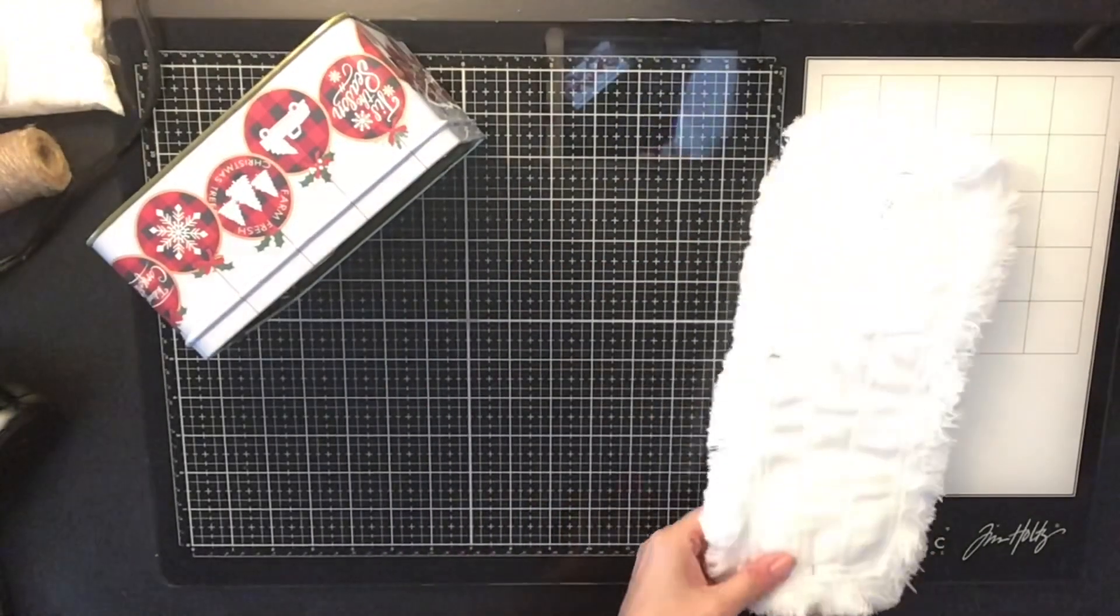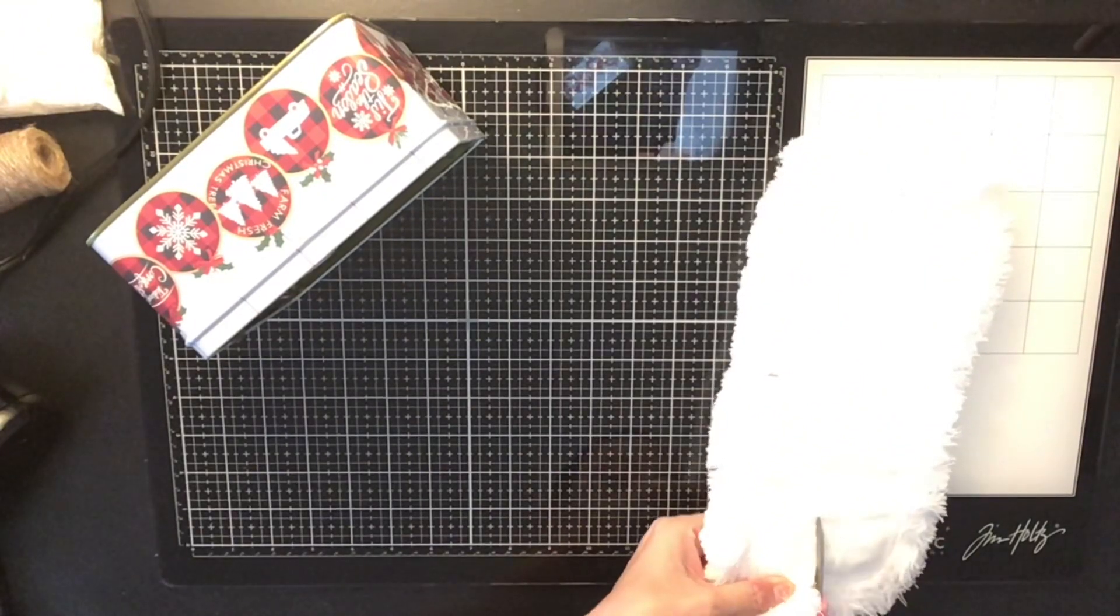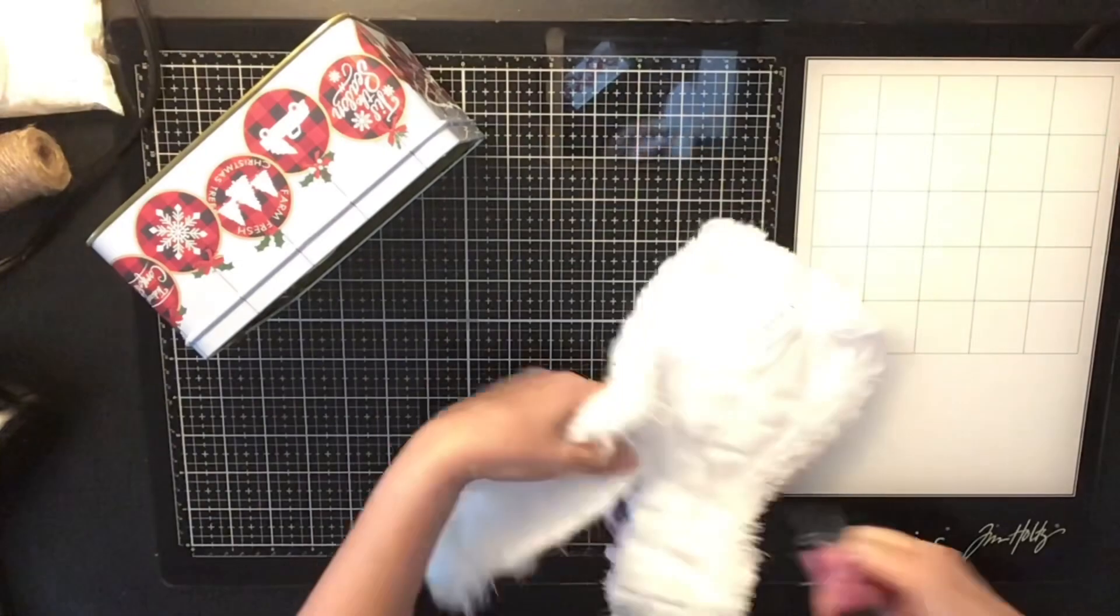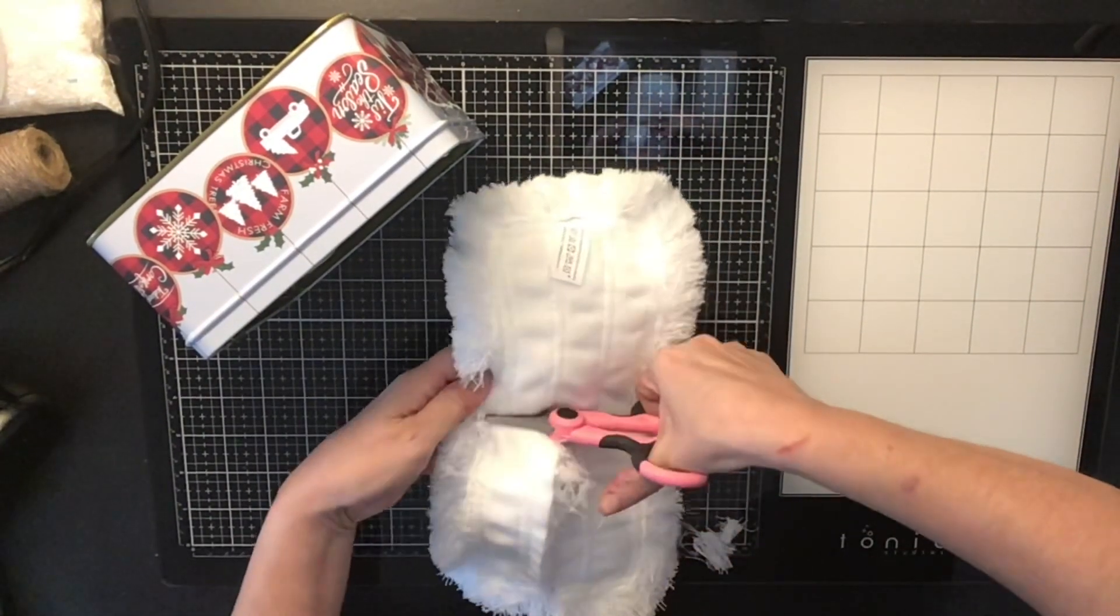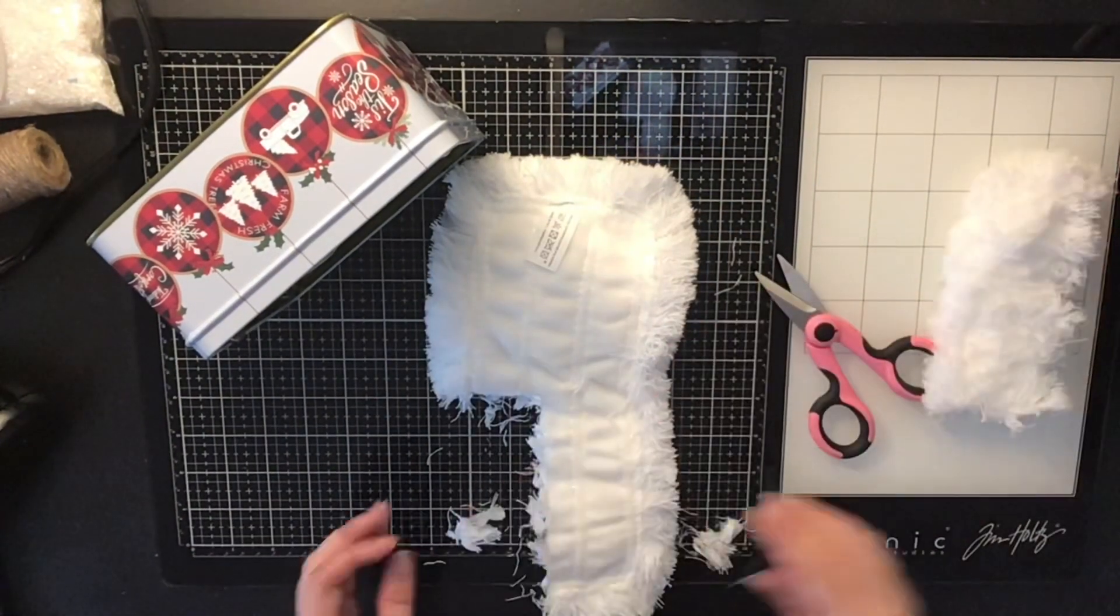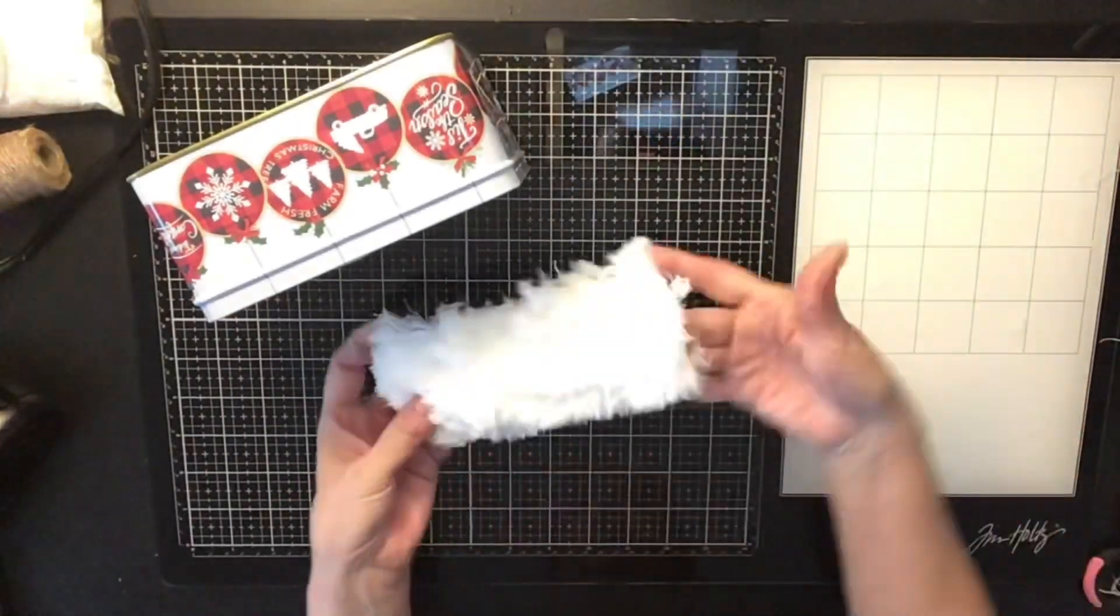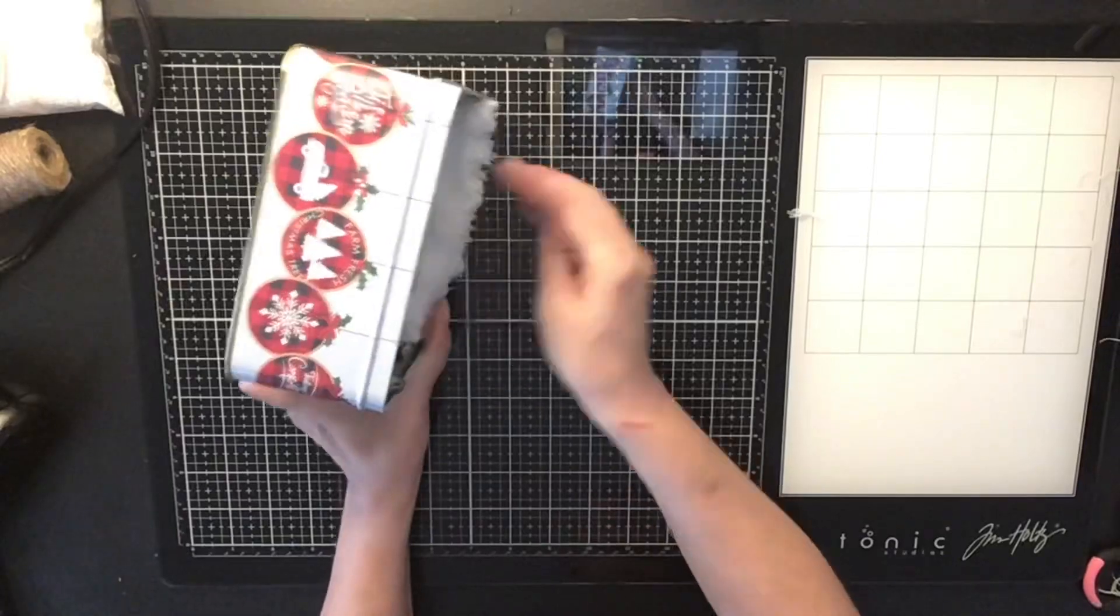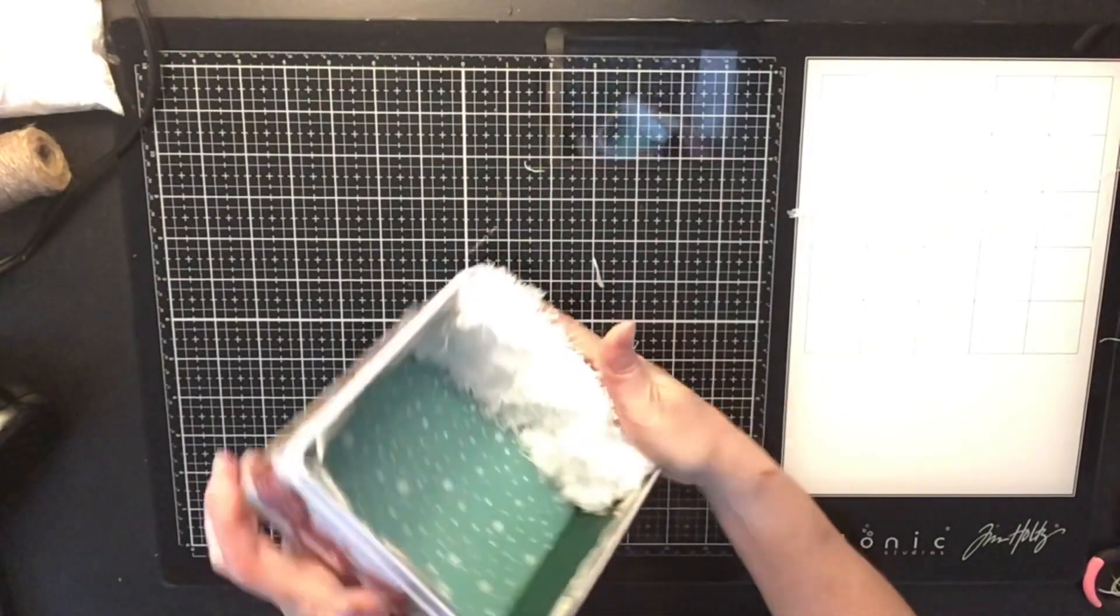And now this is also from the Dollar Tree. And it is like a dust mop and you find it in the mop section where your sponges are and mops and all that kind of stuff. And I just cut it out and it looks like snow. I just measured the bottom of my tin, cut it out perfectly, stuck it inside and it fits perfect.